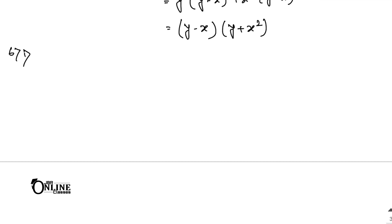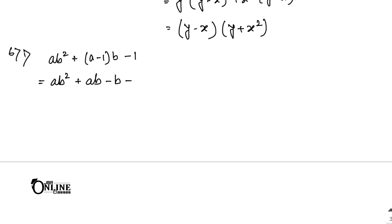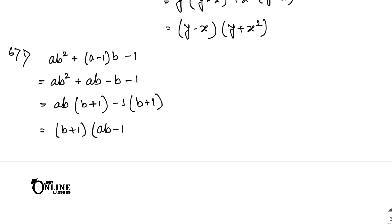Sum 6.1: ab² + (a - 1)b - 1. First multiply out: ab² + ab - b - 1. Common ab from the first two gives ab(b + 1). Common minus 1 from the next two gives minus 1(b + 1). So the answer is (b + 1)(ab - 1).